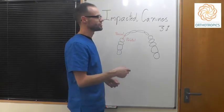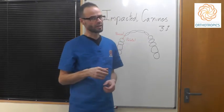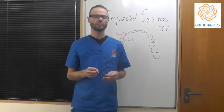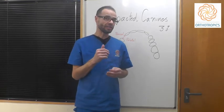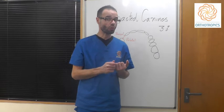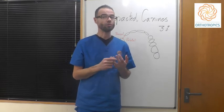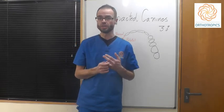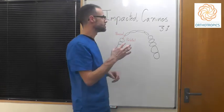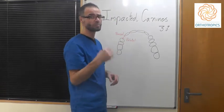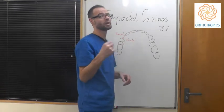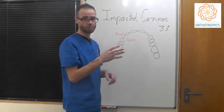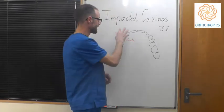Impacted canines occur in about 3% of the population within Europe. Interestingly, it didn't occur at all in our ancestors, nor in any of the other 5,400 species of mammals. It seems to be something occurring in modern man, and possibly becoming more prevalent over time. The main cause seems to be a lack of space.